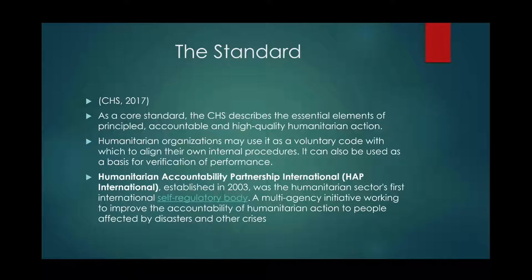As a core standard, the CHS describes the essential elements of principled, accountable, and high-quality humanitarian action. Humanitarian organizations may use it as a voluntary code with which to align their internal procedures, and it can also be used as a basis for verification of performance. The CHS spawned out of the Humanitarian Accountability Partnership International, also known as HAP International, which was established in 2003 as the humanitarian sector's first international self-regulatory body. This multi-agency initiative worked to improve the accountability of humanitarian action to people affected by disasters and other crises. Currently, HAP has converted over to the CHS.